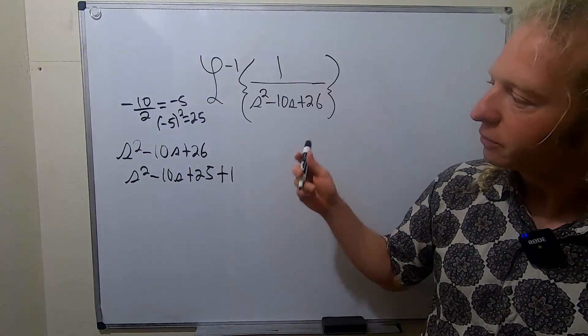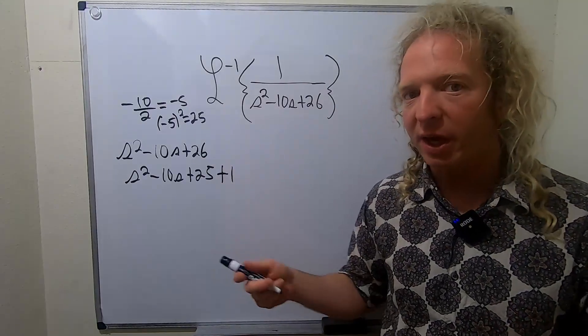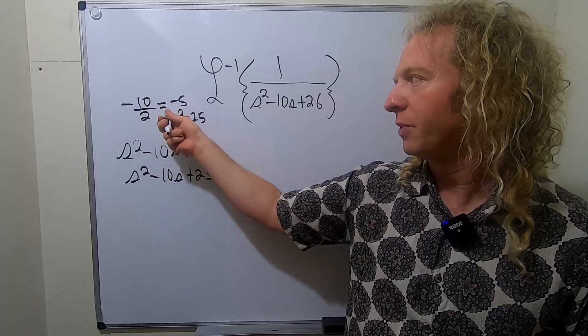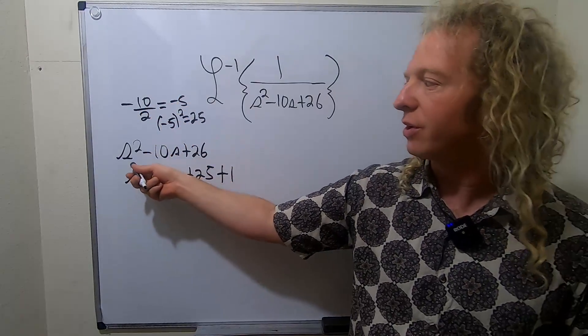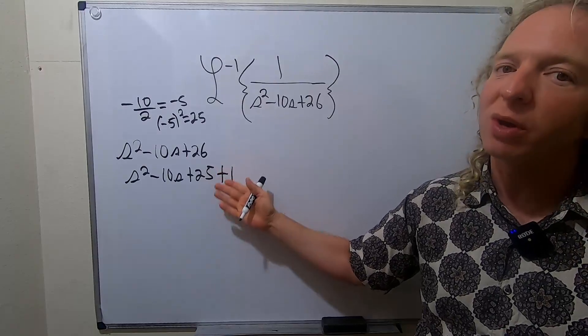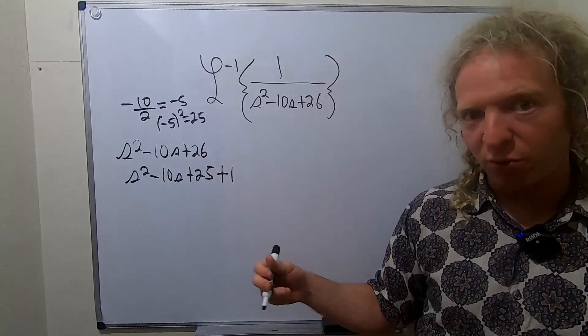So again, you first try to factor it. And if you can't, you resort to completing the square. So completing the square means that you take this number, divide it by 2, and then square it. So 25. So we wrote it down again, s squared minus 10s plus 25. And then we were missing a 1 to get to the 26. So plus 1.